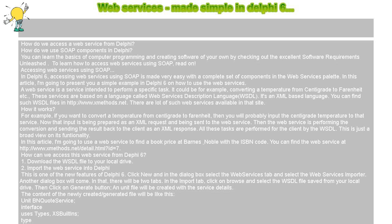All these tasks are performed for the client by the WSDL. In this article, I'm going to use a web service to find a book price at Barnes & Noble with the ISBN code. You can find the web service at http://www.xmethods.net/detail.html?id=7.